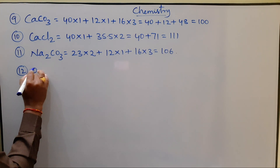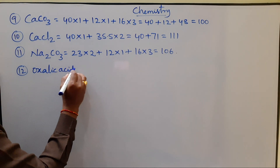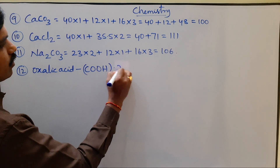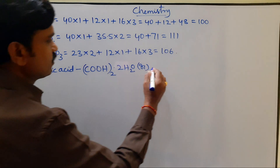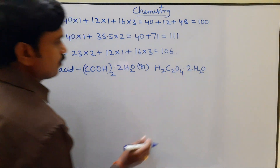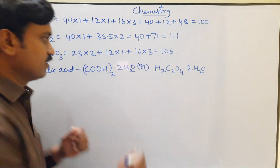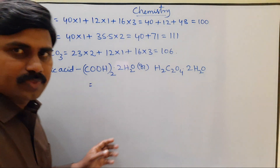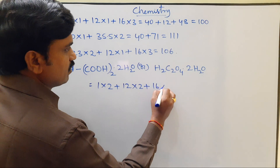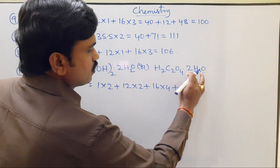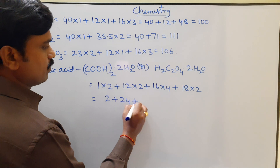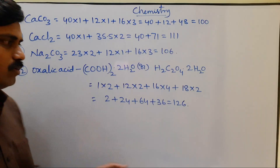Next is Oxalic acid. The chemical formula for hydrated oxalic acid is H2C2O4·2H2O. Two atoms of hydrogen: Hydrogen atomic weight 1 × 2, plus Carbon atomic weight 12 × 2, plus Oxygen atomic weight 16 × 4, plus water molecular weight 18 × 2. That gives 2 plus 24 plus 64 plus 36, which equals 126.